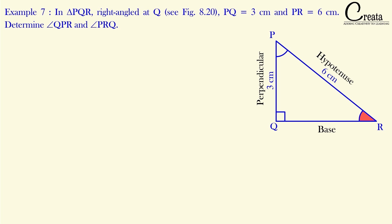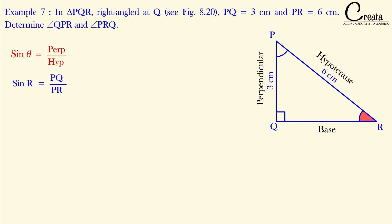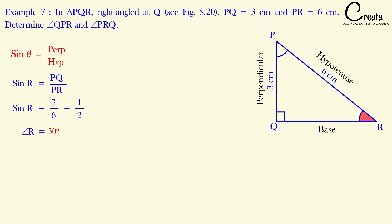We have identified the trigonometric sides, so let's apply the trigonometric ratio. Perpendicular and hypotenuse are given, so the relation between them is sine. Sin R equals PQ upon PR, which is 3 upon 6, giving sin R equal to 1 upon 2. Referring to the trigonometric ratio table, sin 30 degrees equals 1 by 2. So angle R equals 30 degrees.